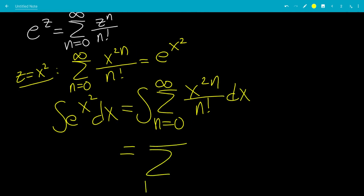So now we can move the sum to the outside, and anything with n to the outside without x. So this 1 over n factorial is not dependent on x, so we can move that out. So that would be the integral of x to the 2n dx.